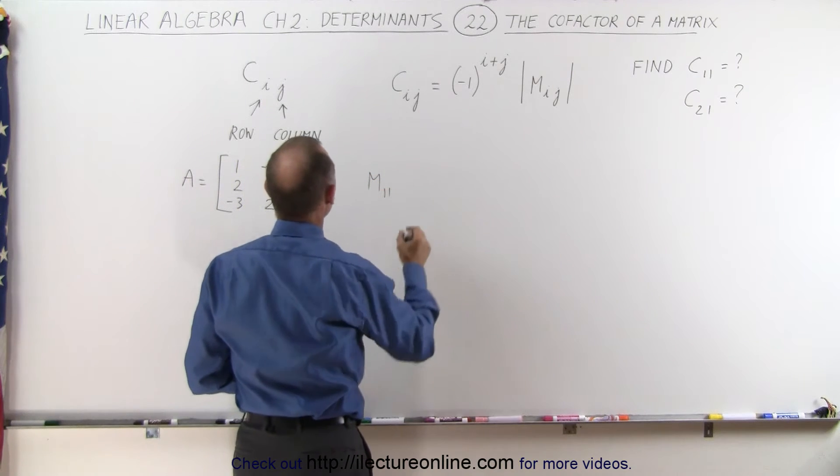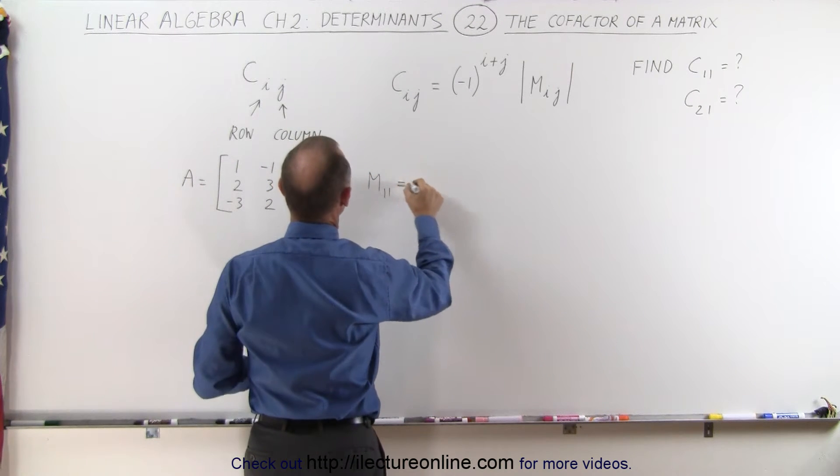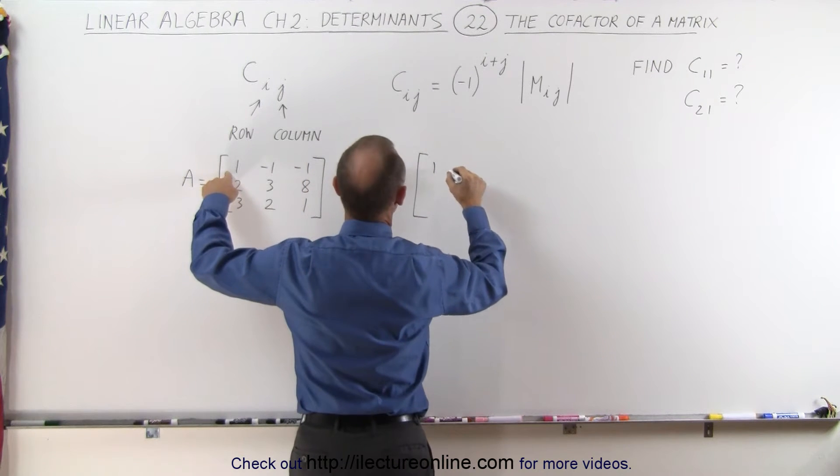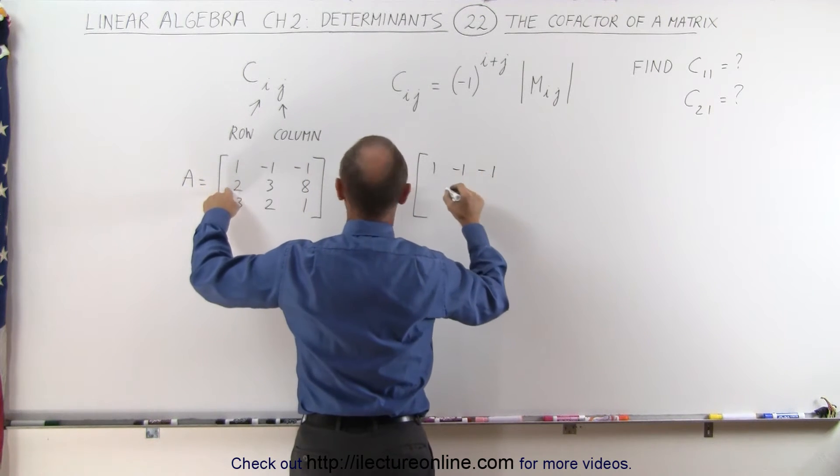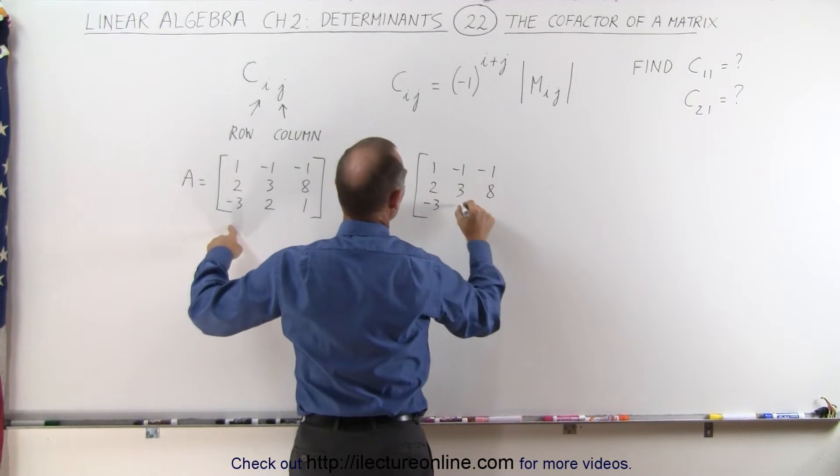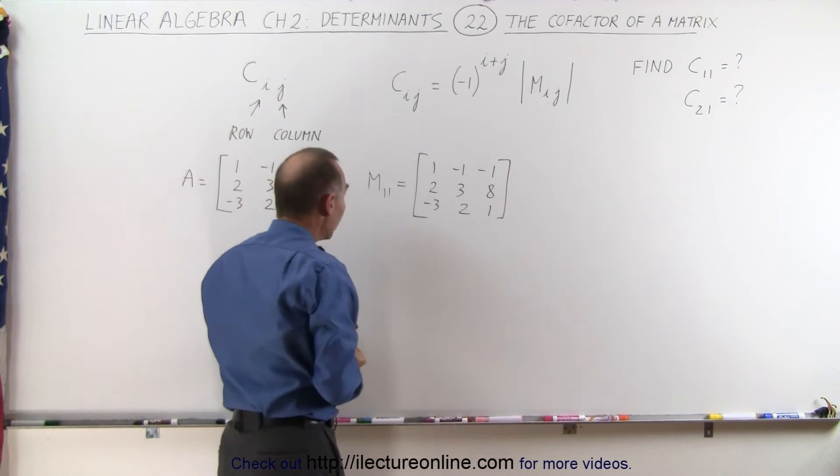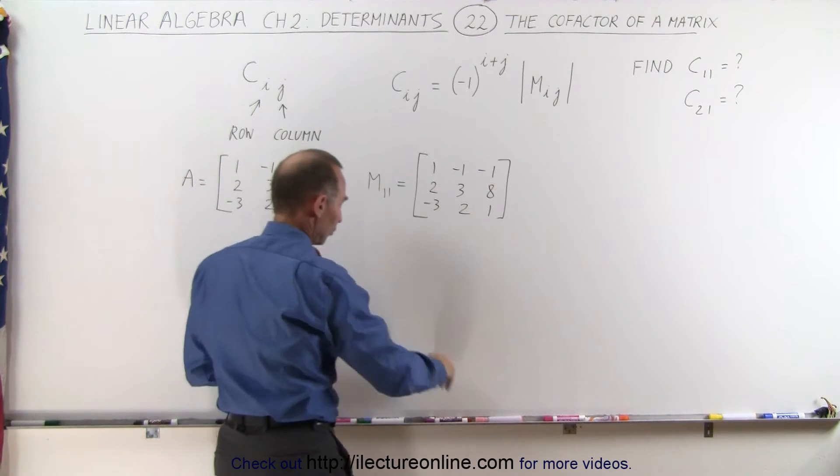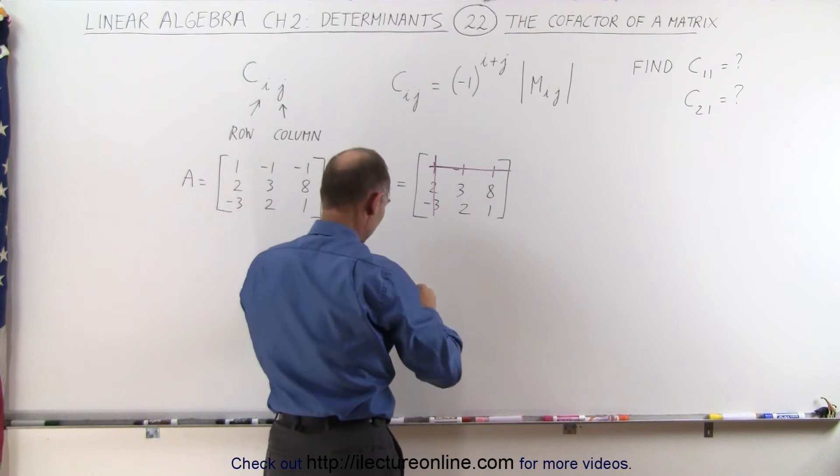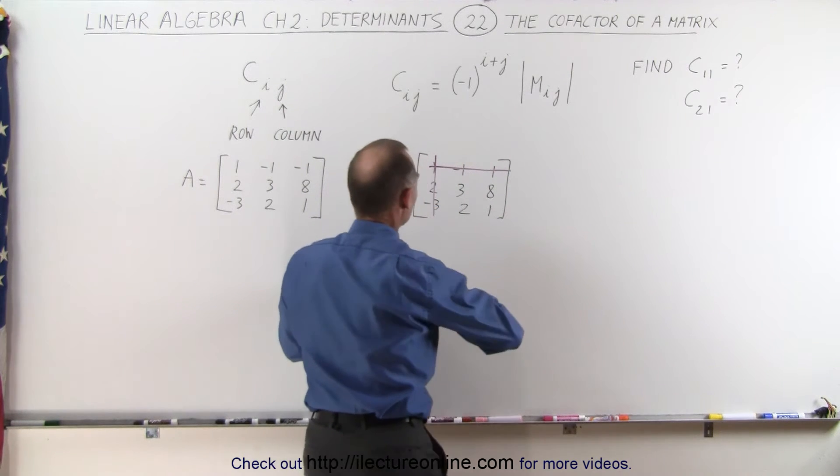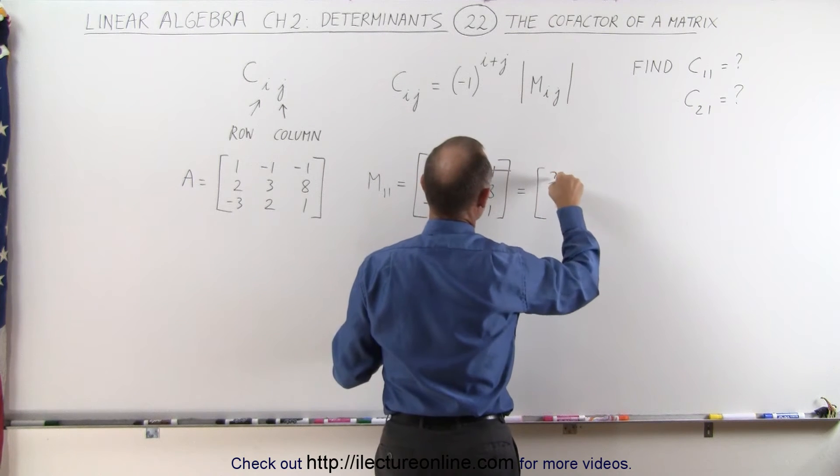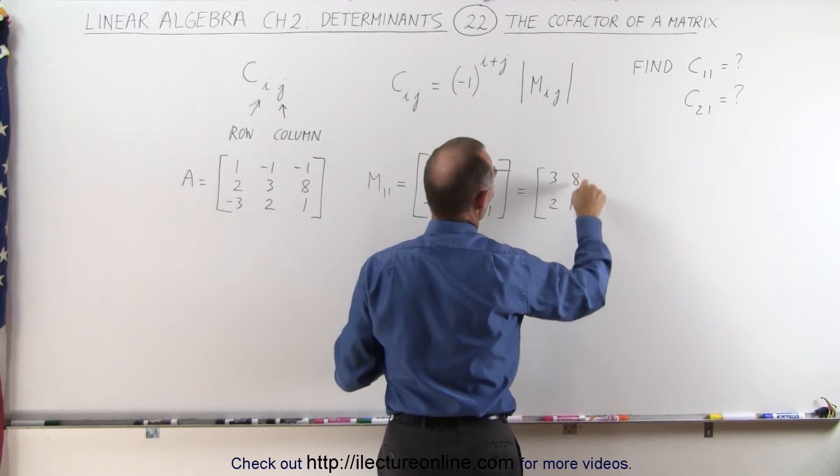m11 can be found by taking the original matrix here, the A matrix, and let's write down all the elements: 1, minus 1, minus 1, 2, 3, 8, minus 3, 2, and 1. And let's get rid of the first row and the first column. Here's the first row, there's the first column, which means that we end up with this matrix right here. This is equal to the matrix 3, 8, 2, and 1.